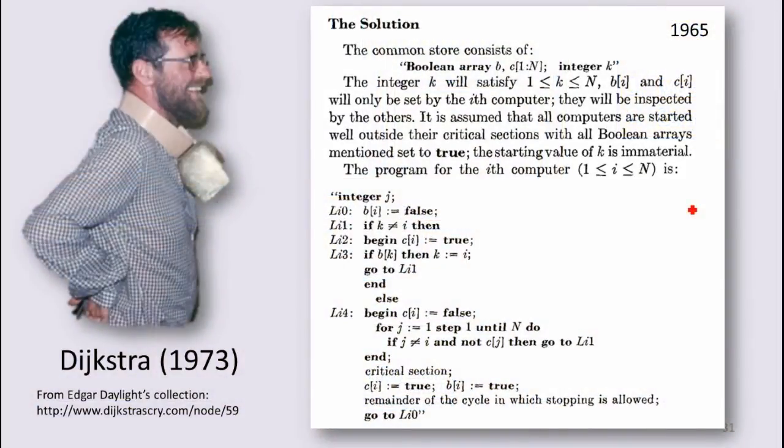So this was the solution. If you're wondering why Dijkstra's wearing a cowbell, that's a good question. You can follow the link and figure it out. But this was his code. So before we get into how this works, how do we like this code?